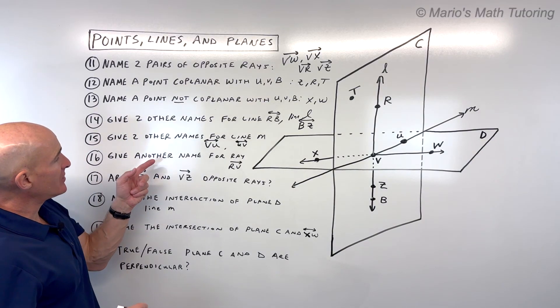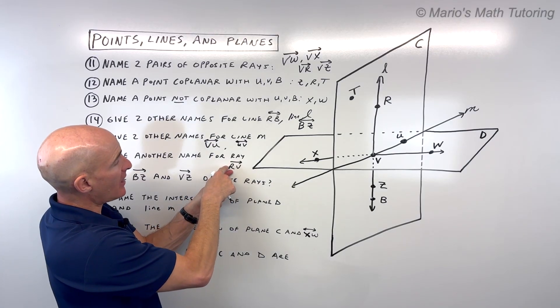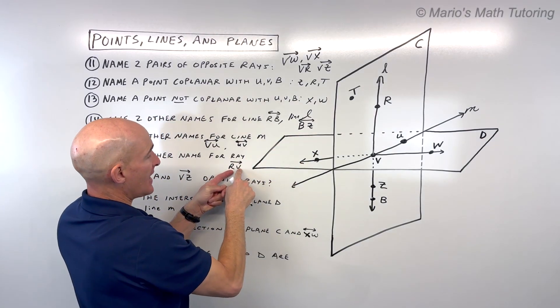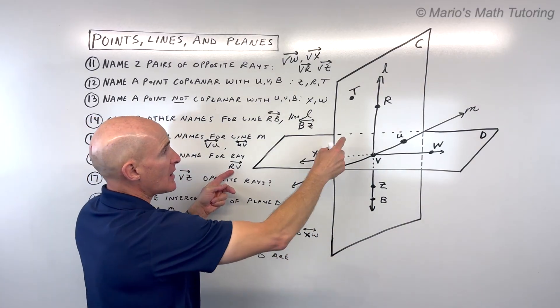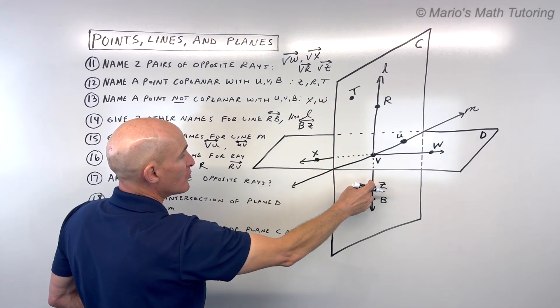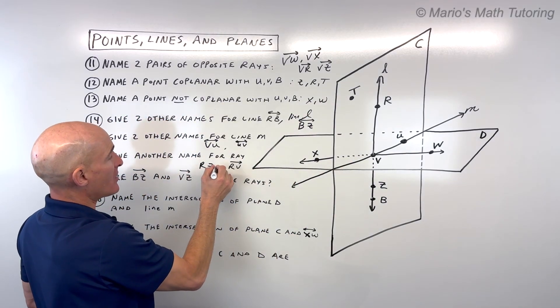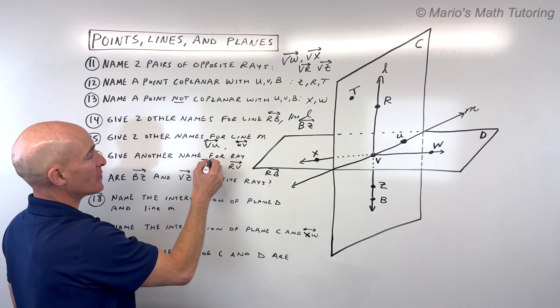For number 16, give another name for ray RV. Notice it's starting at R. That's our endpoint. It's heading towards V. It keeps going. To have another name for this ray, it would still have to start at point R. Maybe we could do Z or B. So it could be RZ, or it could be RB.